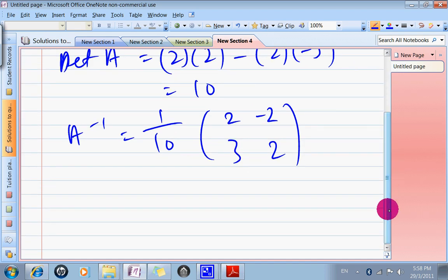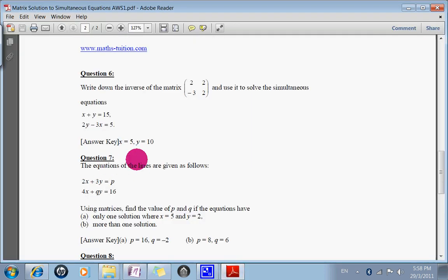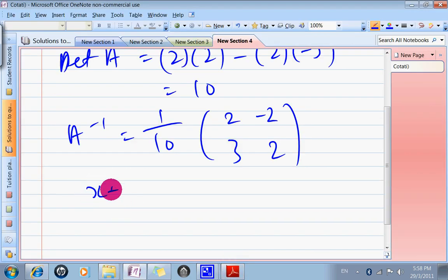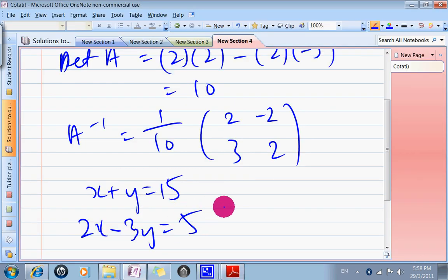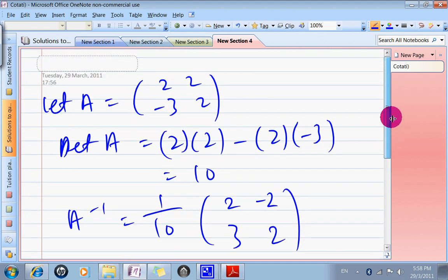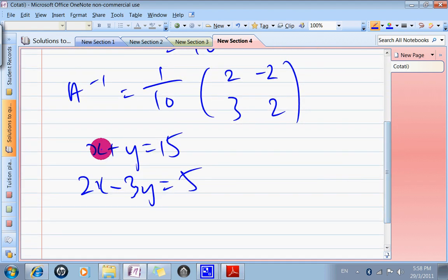And we are asked to use it to solve x plus y equals to 15, 2x minus 3y equals to 5. So let's look at our A inverse. It's 2, 2.